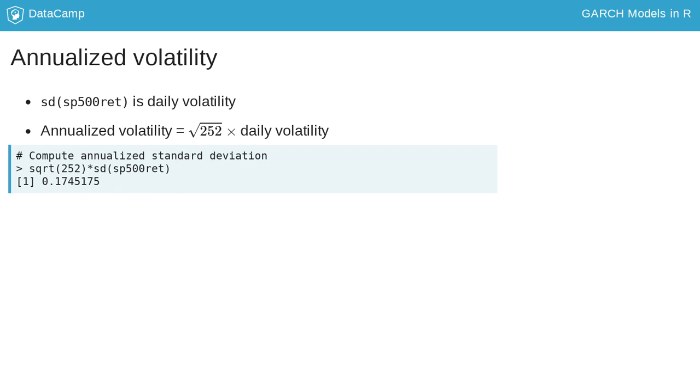This gives you the standard deviation that you can expect on yearly returns. For the S&P 500 you get a 17% annualized volatility.